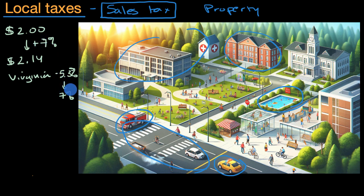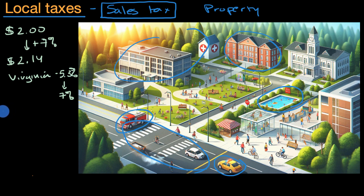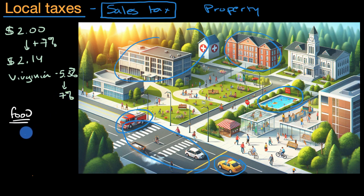Not everything that you buy or sell will have a sales tax of exactly 7%. In fact, some communities try to use this to motivate certain behaviors. For example, you might have a higher sales tax on things like alcohol or cigarettes, and you could have a much lower sales tax or no sales tax on things that are considered necessities. For example, non-prepared food — so if you were to just go buy groceries, that oftentimes has no sales tax or much lower sales tax than if you were to go to a restaurant and have prepared food, where it might be 7% or higher.